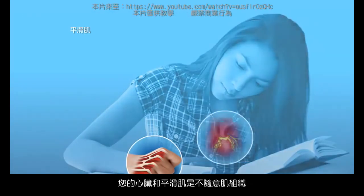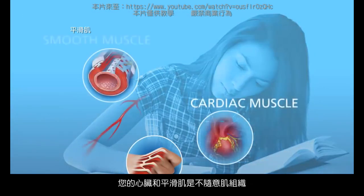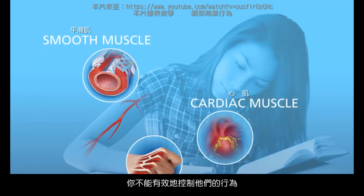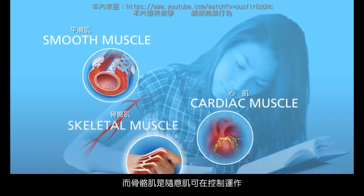Your cardiac and smooth muscle tissues are involuntary — you do not consciously control their actions. Skeletal muscle, however, works under voluntary control.